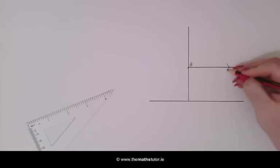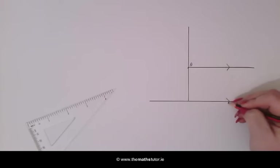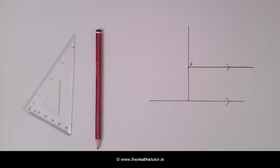And here we can see we have a parallel line to our given line going through A. Try both of these methods out for yourself and see you in the next lesson.